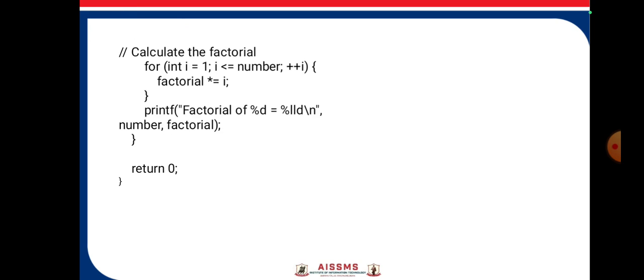Calculate factorial using a for loop. First, initialize factorial to 1, then iterate from 1 to the entered number, i from 1 to number inclusive.